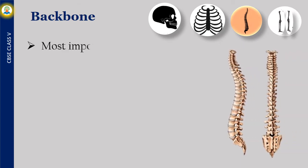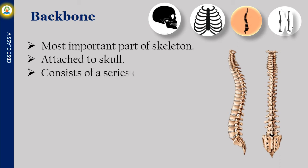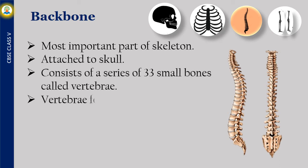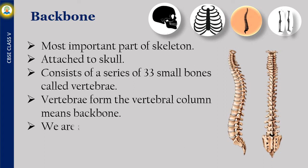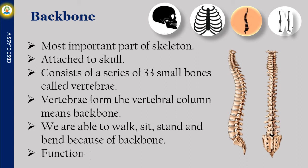The backbone is the most important part of the skeleton. It is attached to the skull and consists of a series of 33 small bones called vertebrae. Vertebrae form the vertebral column, which is the backbone. We are able to walk, sit, stand and bend because of the backbone. Function: protects the spinal cord.